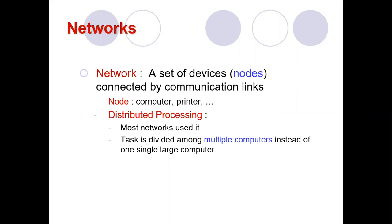Separate computers — usually personal computers or workstations — can handle a subnet. Four to five or ten computers together can be called a subnet, and all these subnets together can accomplish a task. That is the brief overview of distributed processing.